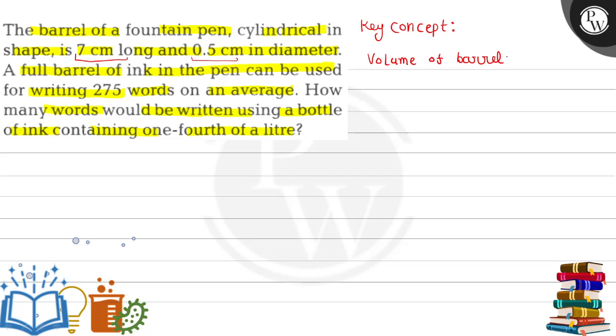The barrel is cylindrical type, so volume equals π r squared h, where r is radius and h is height. Radius equals diameter upon 2, so r equals 0.5 upon 2 cm. Volume of barrel equals 22 upon 7 into 0.5 upon 2 into h value.